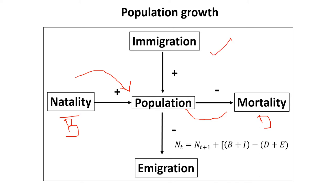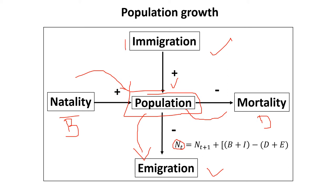Migration has two types: immigration and emigration. The population growth equation is: N(t) = N(t) + B + I − D − E, where B is birth rate, I is immigration, D is death rate, and E is emigration. Birth and immigration are positive contributions to the population, while death and emigration are negative. That is the total population growth at a particular time.